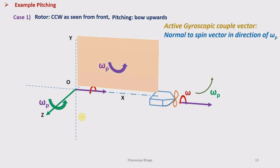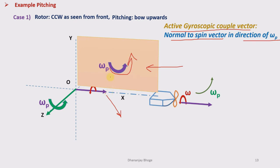Next is the active gyroscopic couple vector. We obtain the active gyroscopic couple vector by rotating the spin vector through 90 degrees in the direction of precession velocity Omega_p. This is the spin vector, and I rotate it in the precession plane by 90 degrees in the direction of Omega_p — that is counterclockwise in this plane. When I do that, I get the vector along OY. This vector is represented as C_g; the active gyroscopic couple vector is in the upward direction.